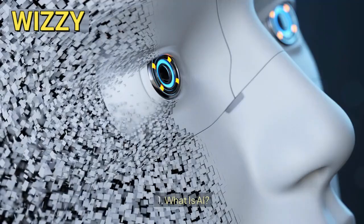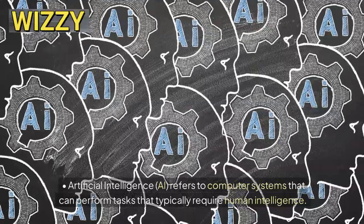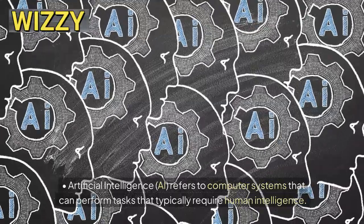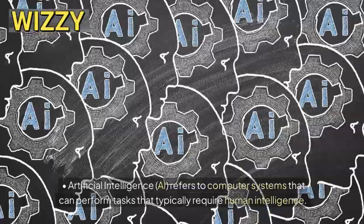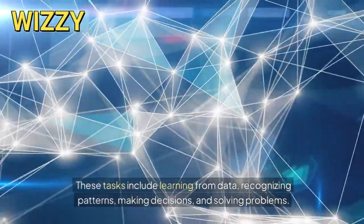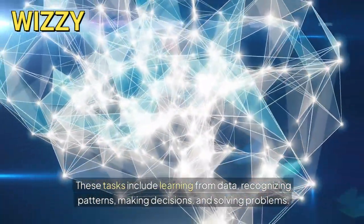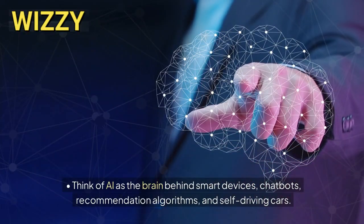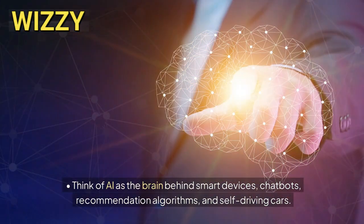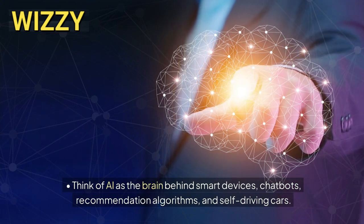One: what is AI? Artificial intelligence, or AI, refers to computer systems that can perform tasks that typically require human intelligence. These tasks include learning from data, recognizing patterns, making decisions, and solving problems. Think of AI as the brain behind smart devices, chatbots, recommendation algorithms, and self-driving cars.